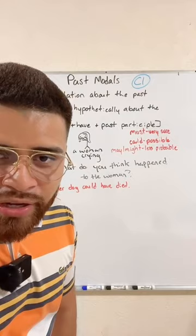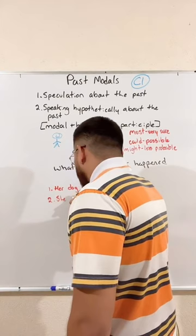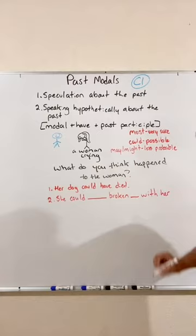Eric said, 'She could broken with her boyfriend.' Very close, Eric. Eric is missing two words — 'have' is missing, and what goes after 'broken'? She could have broken up with her boyfriend. That's perfect.